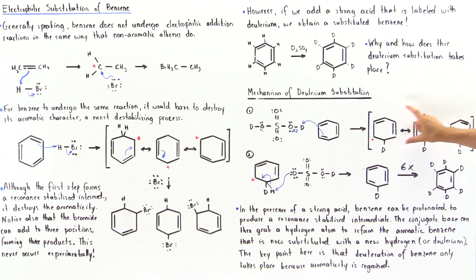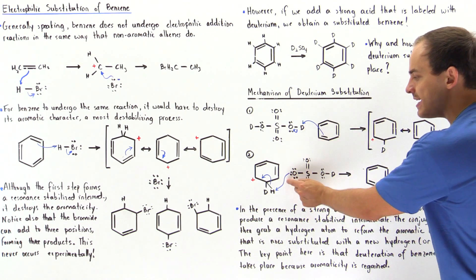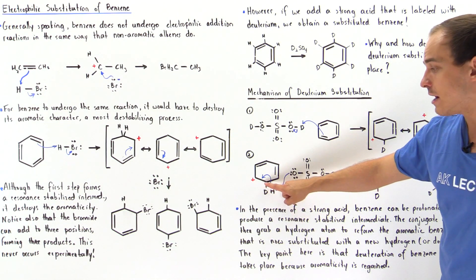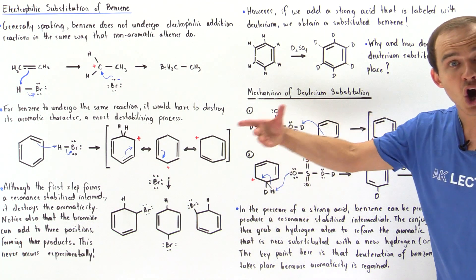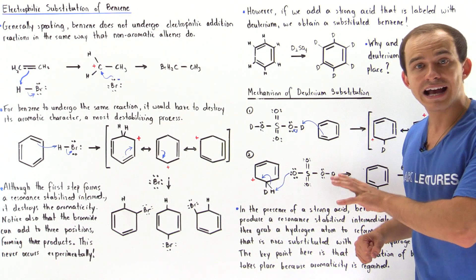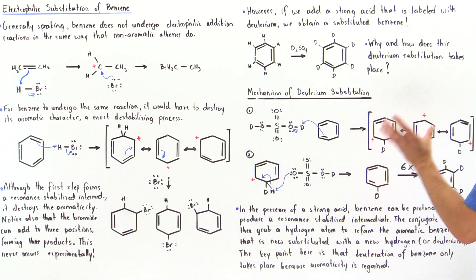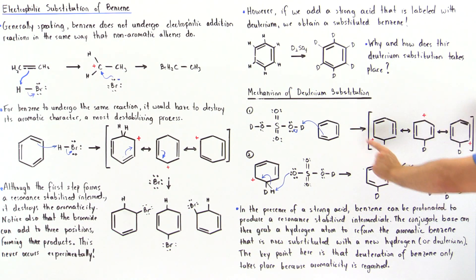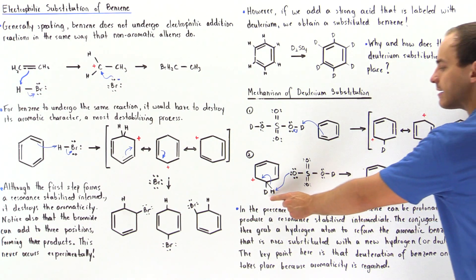In the deuterium substitution, what happens instead is that the resonance-stabilized intermediate is present, and in the second step the conjugate base — which now has one fewer deuterium — uses its lone pair of electrons to remove the H atom from the carbon bearing the deuterium. Those two electrons in the sigma bond are left over and form a pi bond between the two carbons. The key point is that aromaticity is reformed — even though it was momentarily lost in the intermediate, it is regained in the product, which now bears a deuterium instead of H.